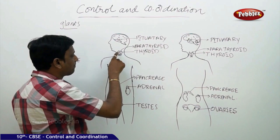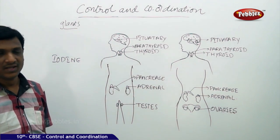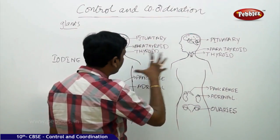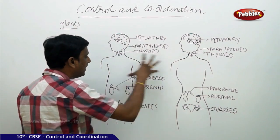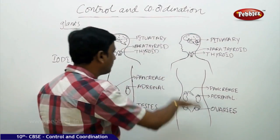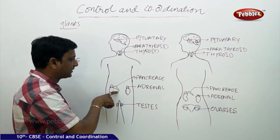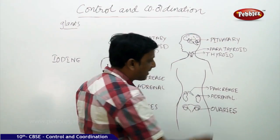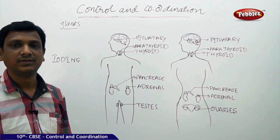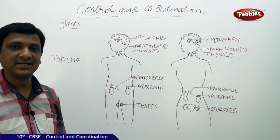Beside the thyroid, attached to it, you find small parathyroid glands. In the neck region, we see both thyroid and parathyroid. These are common in both females and males. Moving down to the abdominal region, we have an important organ-cum-gland: the pancreas. The pancreas helps in digestion by secreting pancreatic juice, and at the same time, it acts as a gland and secretes hormones.